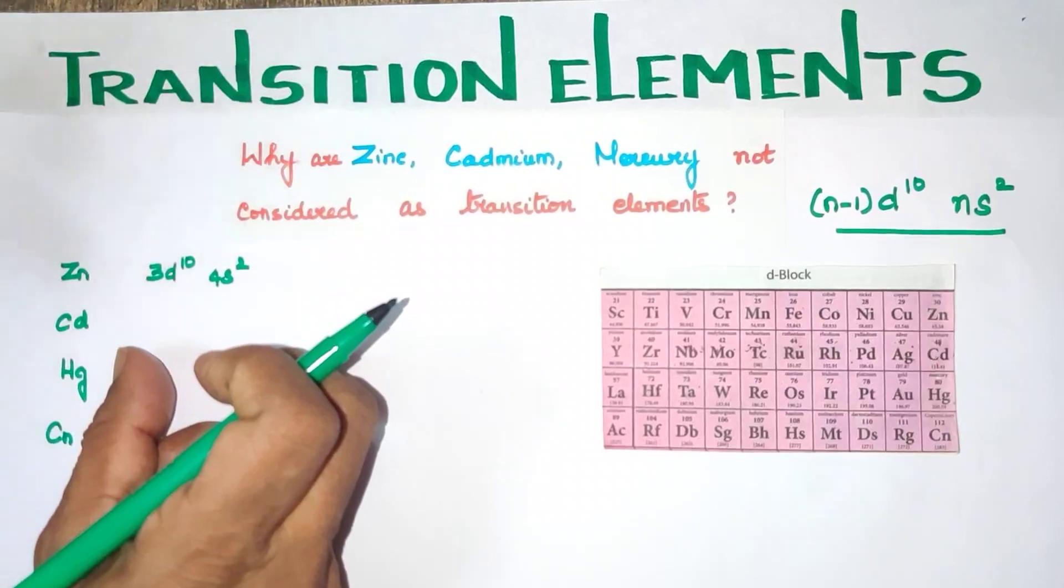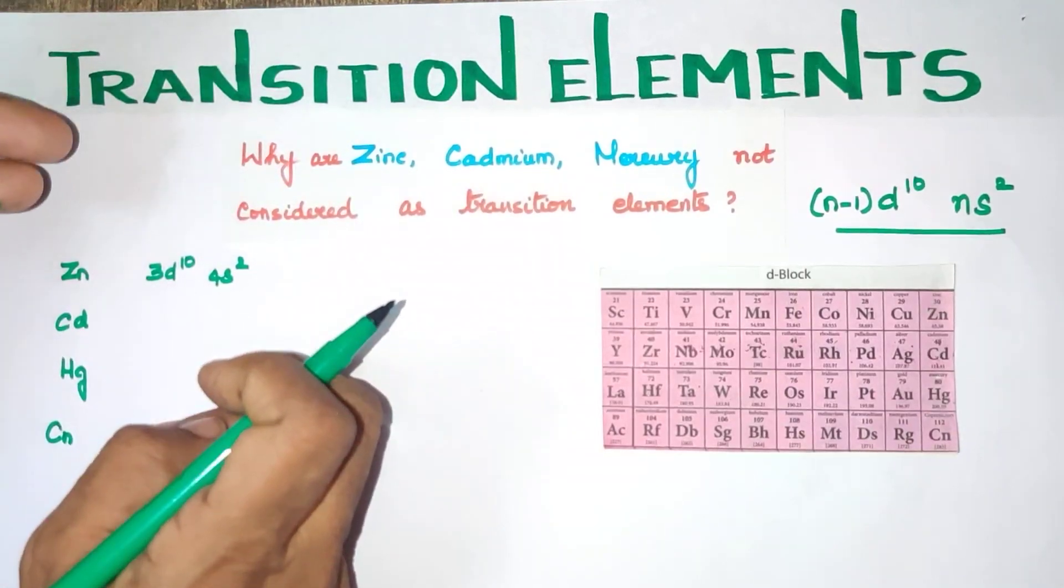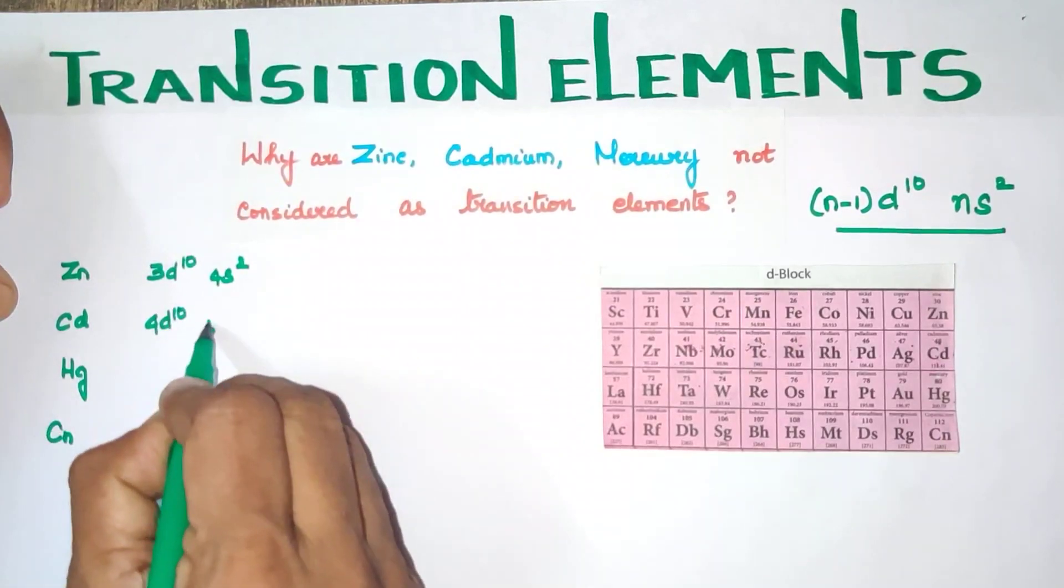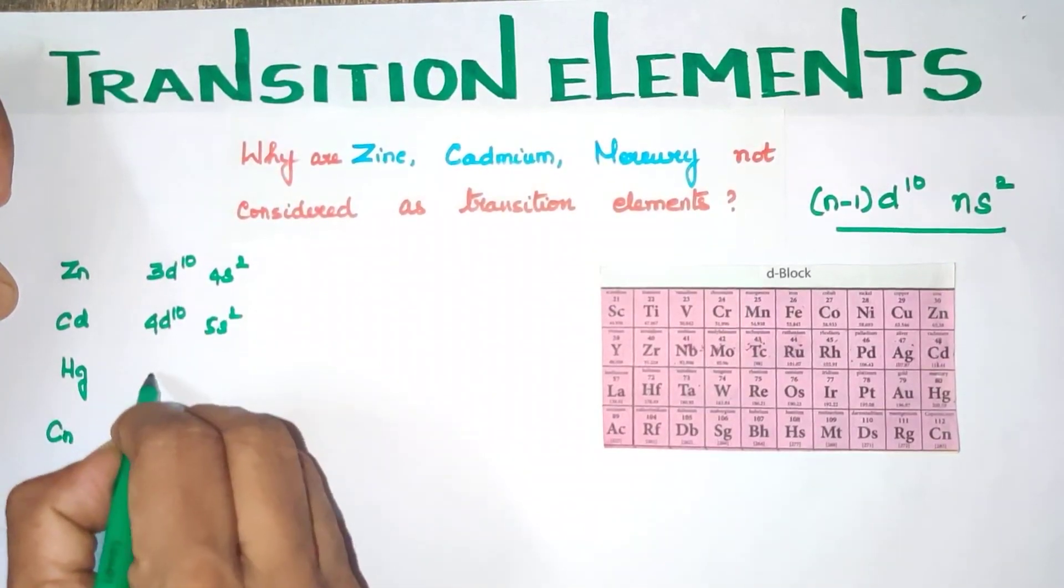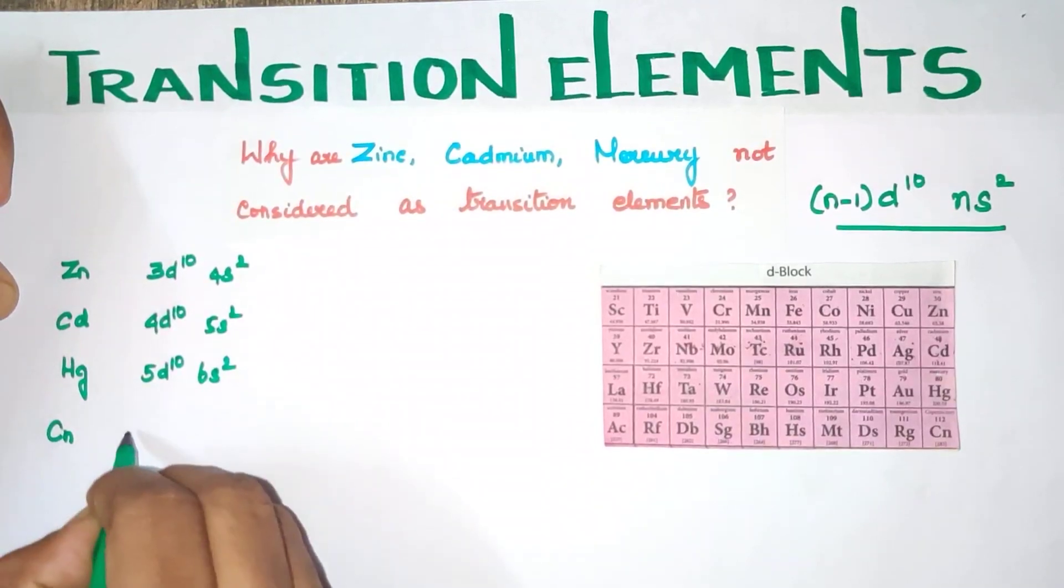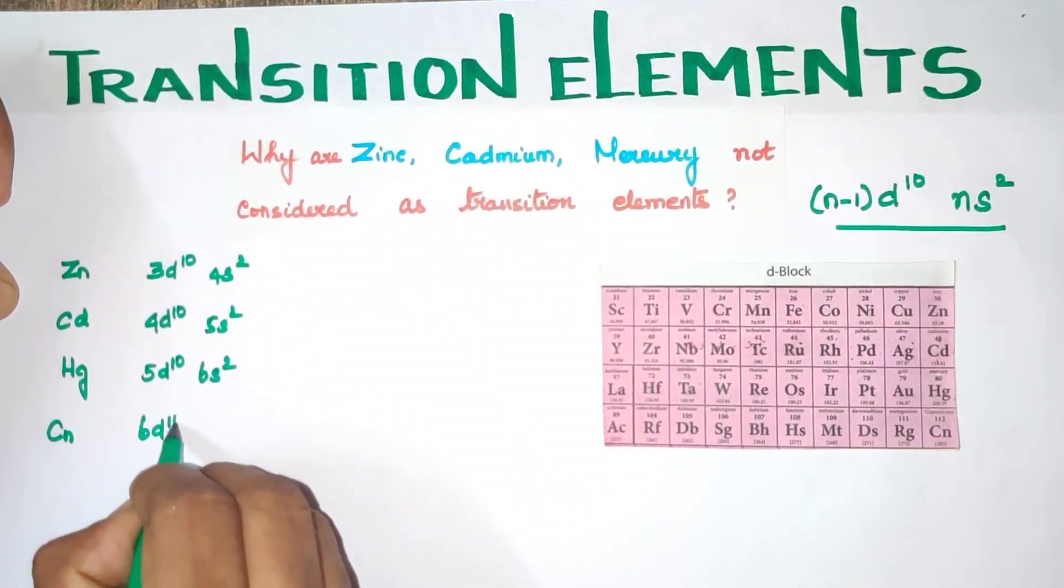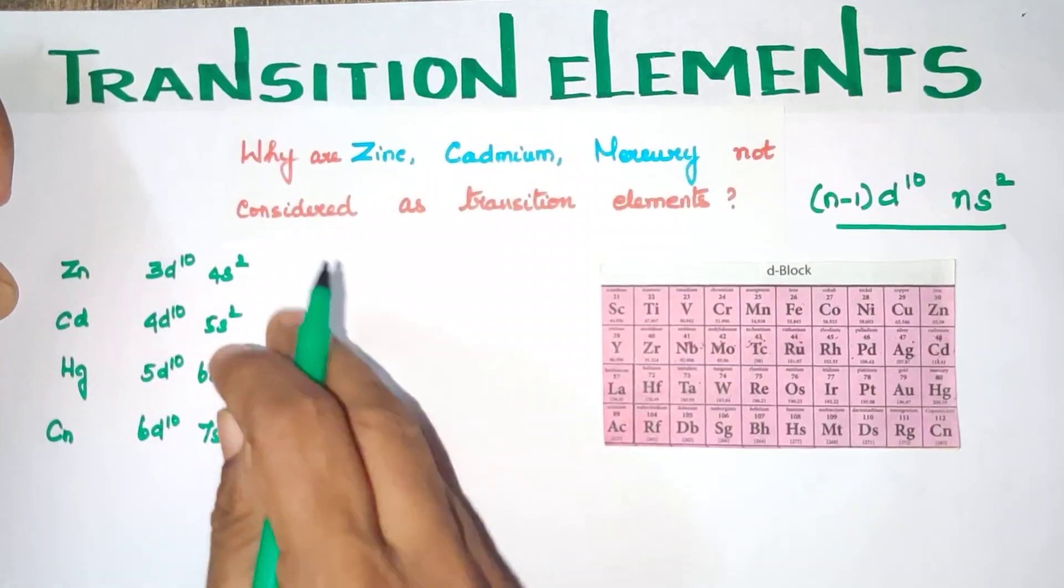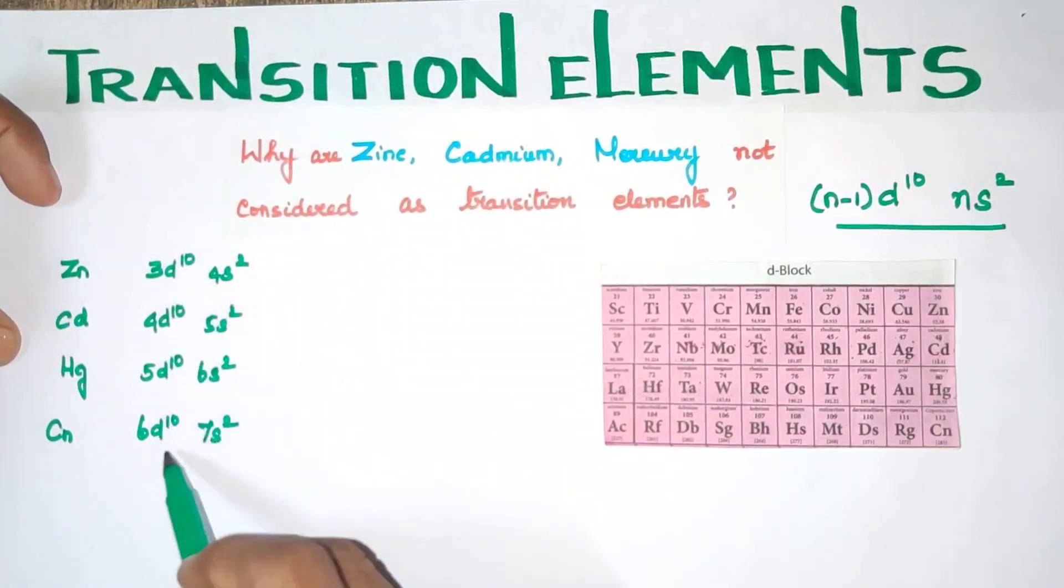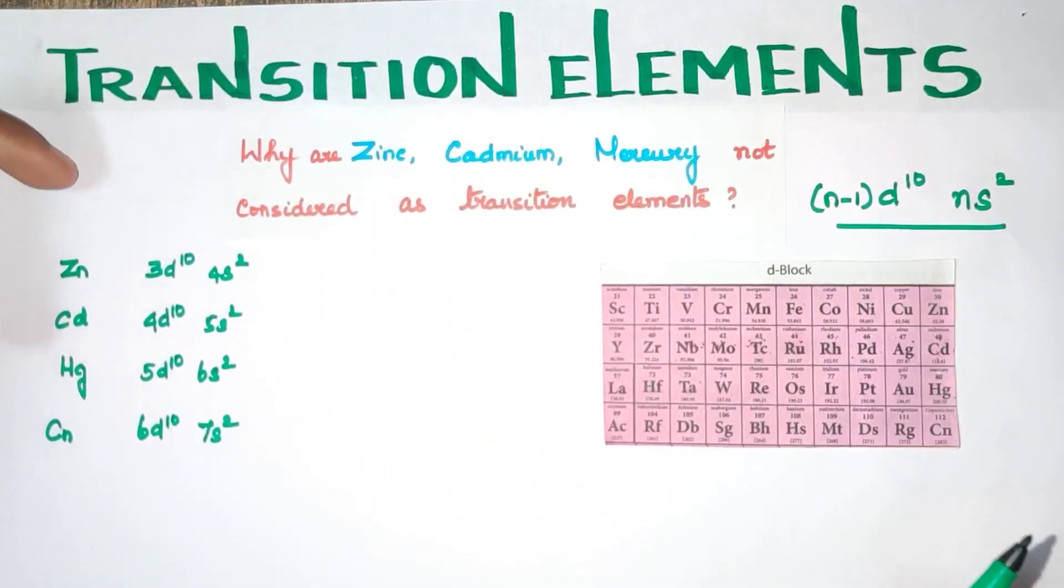So that is why we will define the reasons. Note: Cadmium is 4D10, 5S2. Mercury is 5D10, 6S2. Copernicium is 6D10, 7S2. This is the Outer Electronic Configuration. Note D is completely filled and S is completely filled.